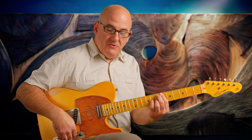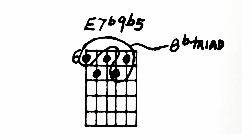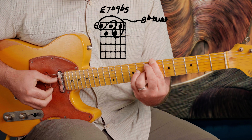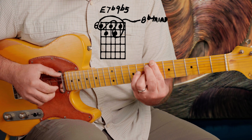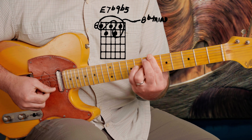Here is the same chord in a different inversion. We're on fret 6 again, but this time we have the Bb triad on fret 6, with the root, 3, and 5, as you can see in the diagram. This one's kind of jumbled up, and we have the notes from the E7 in the middle of the voicing. So we have the b5, root, 3, b7, and b9.